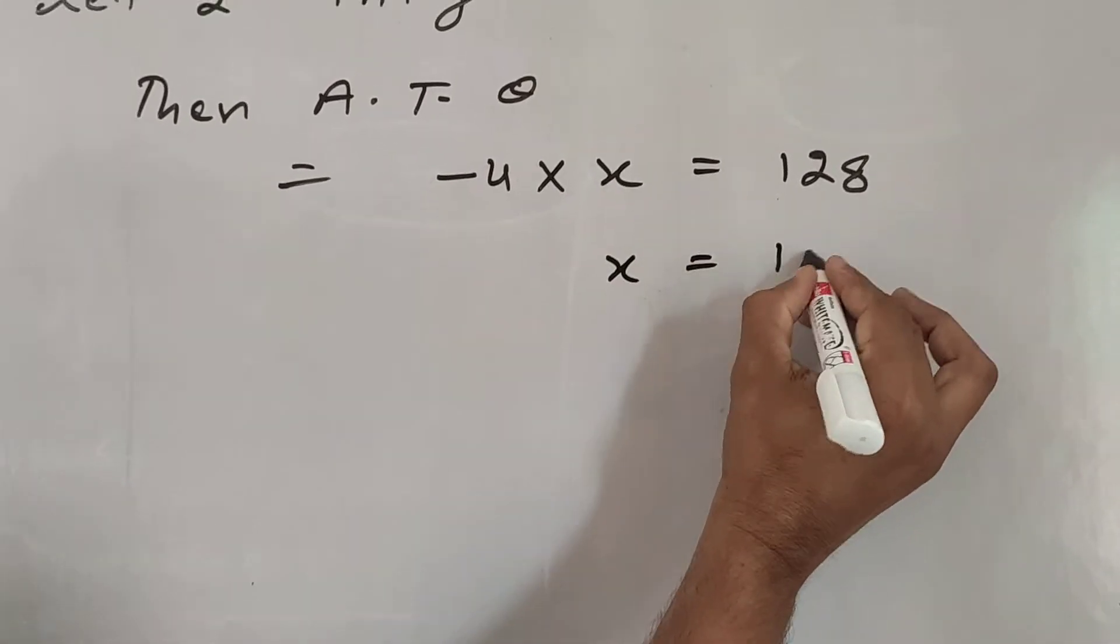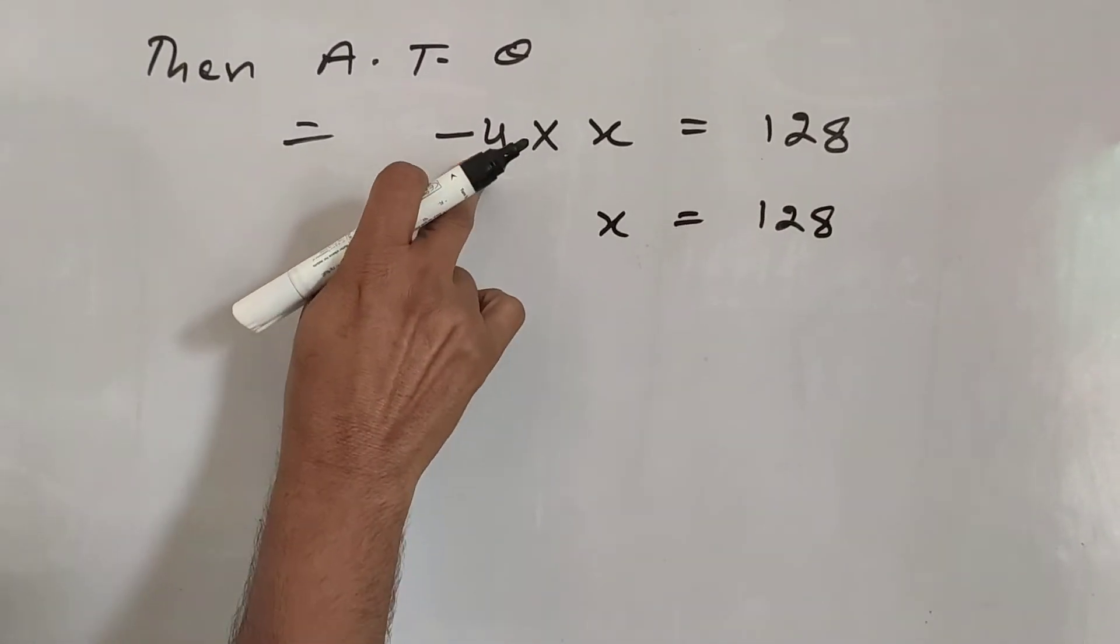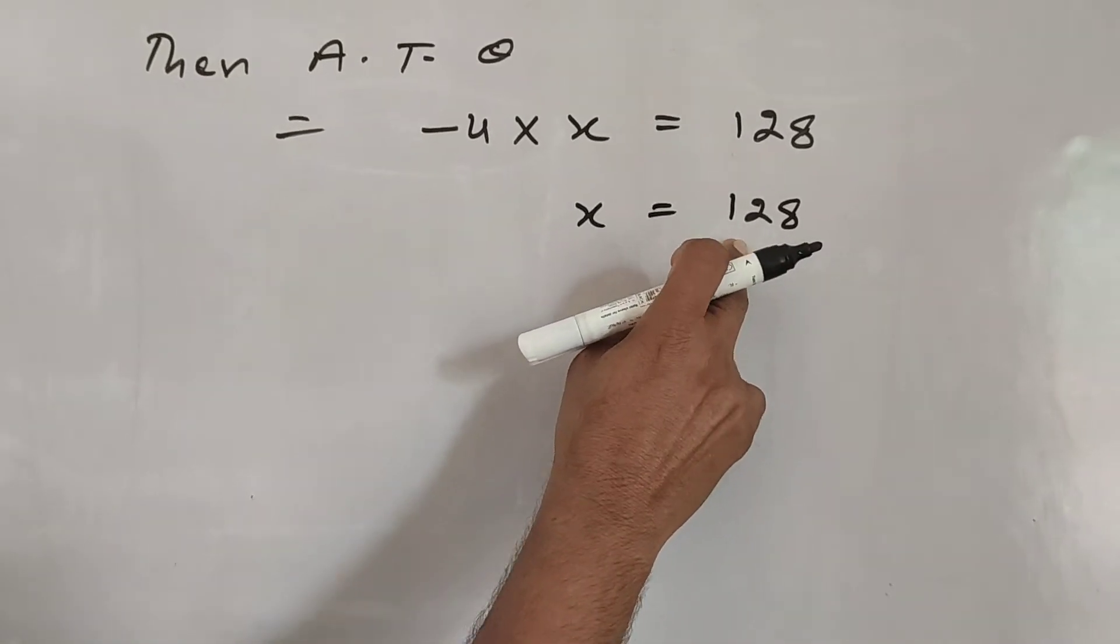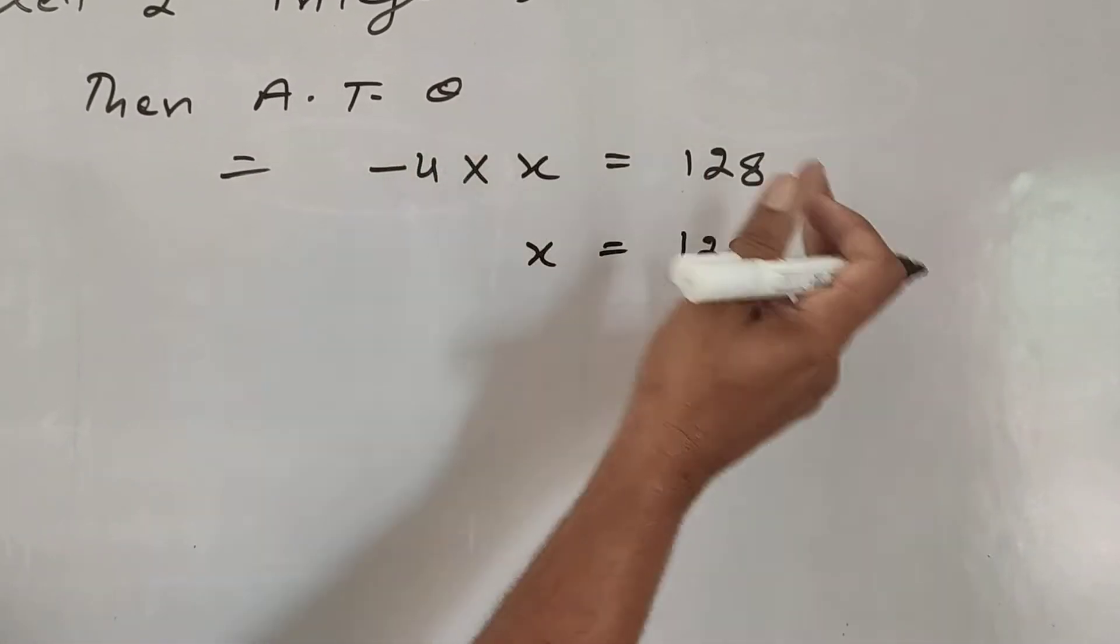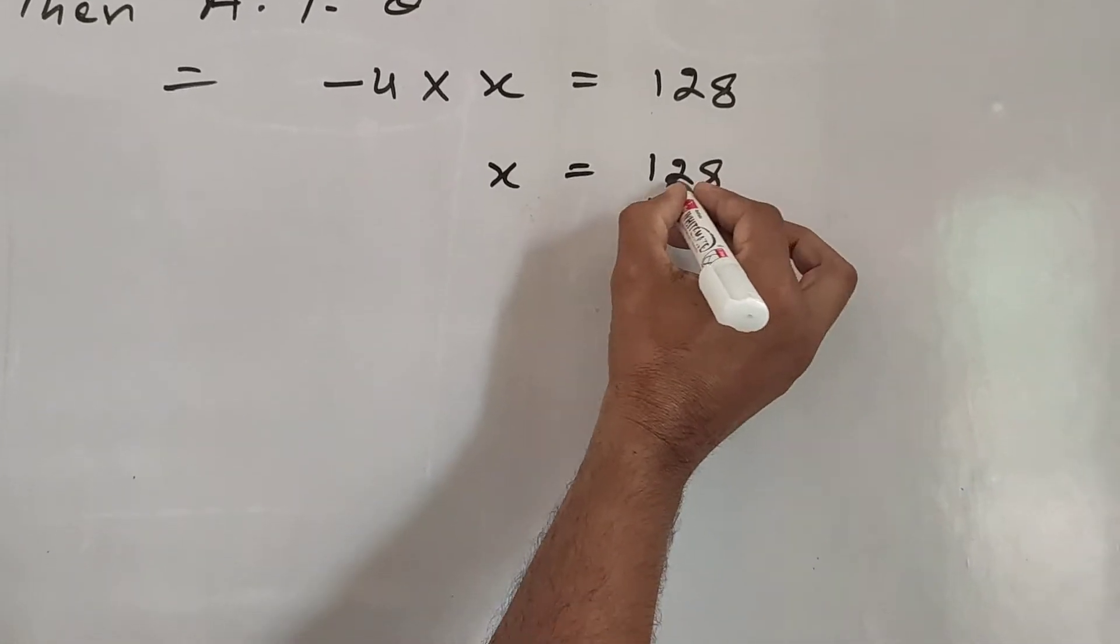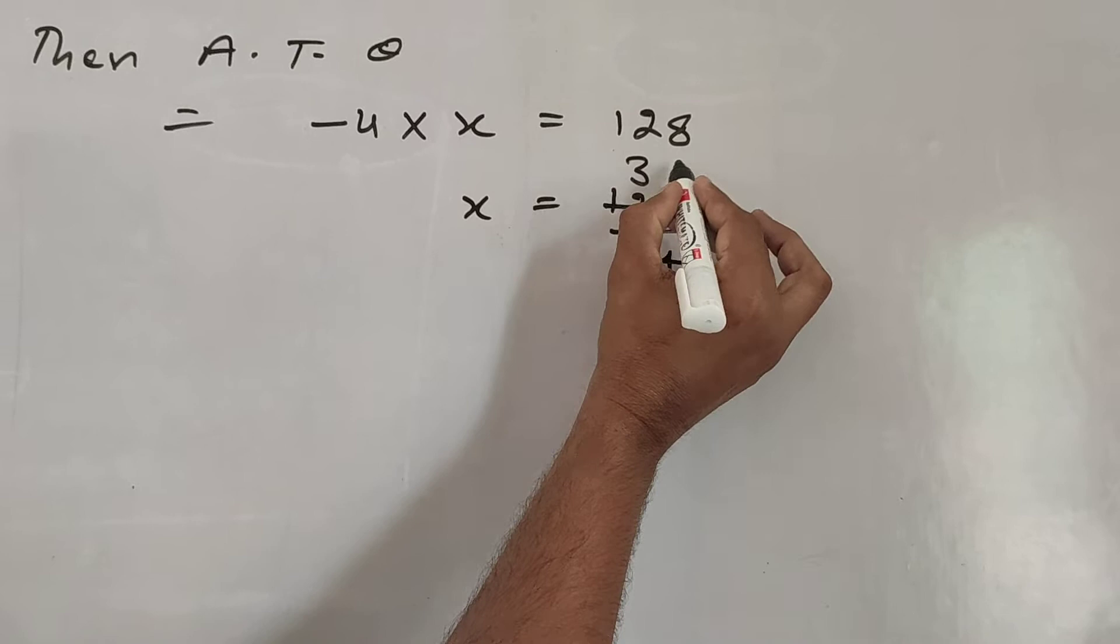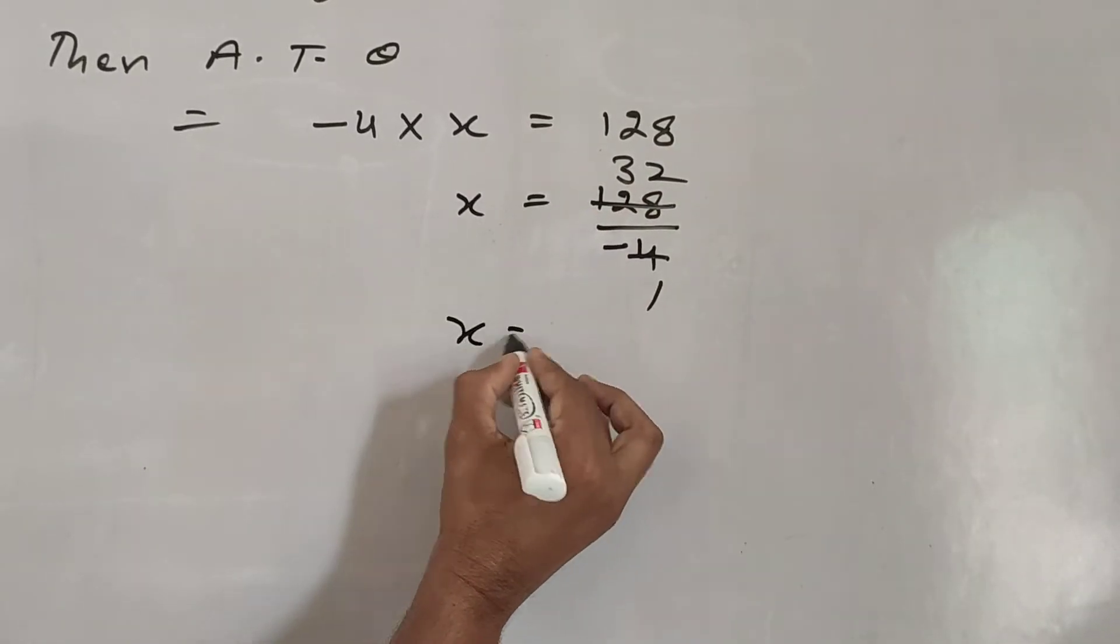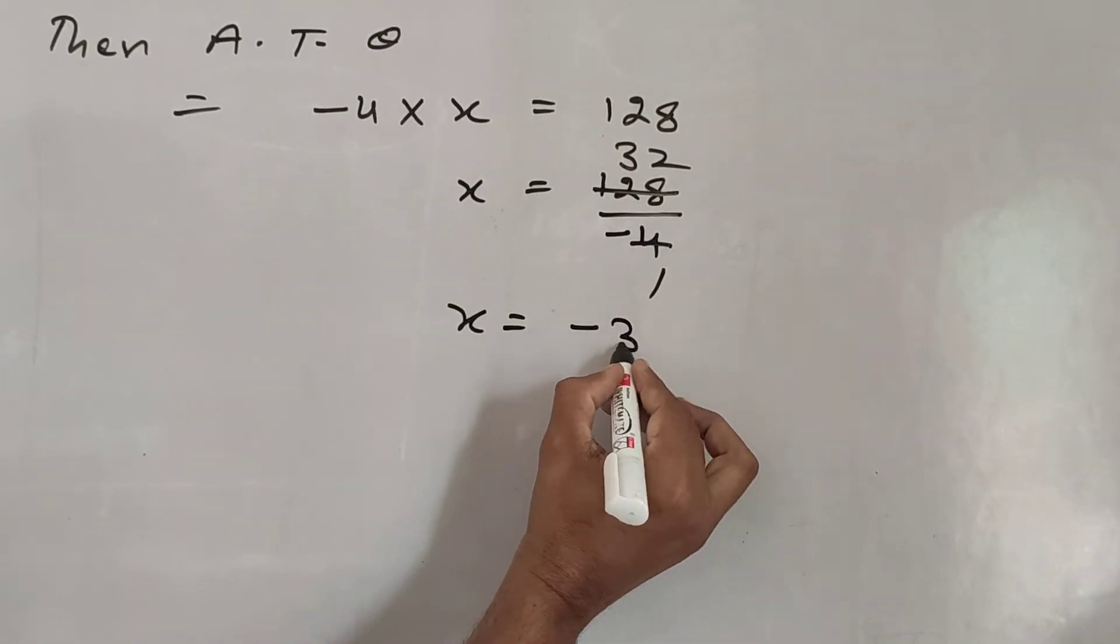Then, x equals 128 divided by minus 4. Then, x equals minus 32.